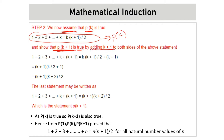Here, we are adding K plus one to both sides. On LHS, we have added K plus one, and on RHS we have also added K plus one. We will try to solve the RHS first. The RHS becomes K into K plus one divided by two plus K plus one, which simplifies to K plus one into K plus two divided by two.